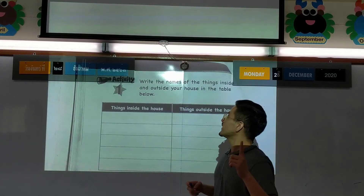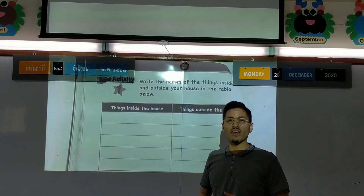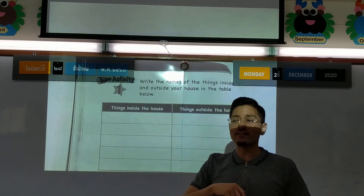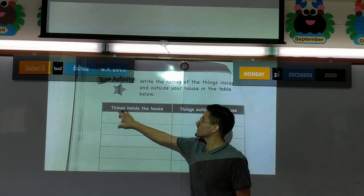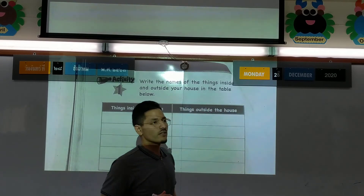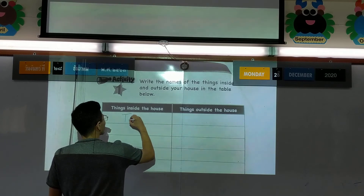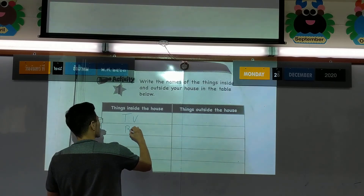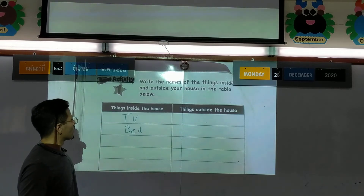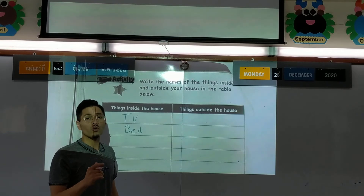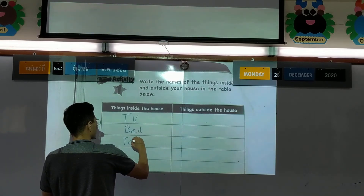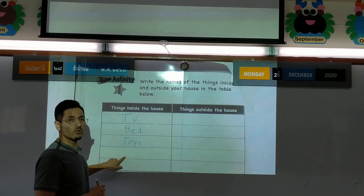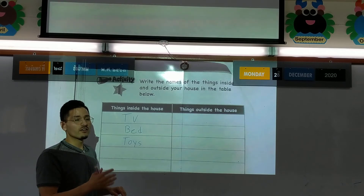This is Activity One - I'm going to do it with you. Write the names of things that you see inside and things you see outside. First, things inside the house - what do you see? In my house I see a TV. I see the bed - that's a good one. Maybe at your house you have toys - you can put toys. Now I'll let you do two more by yourself - write two things you can see inside the house.